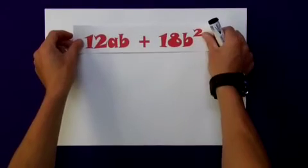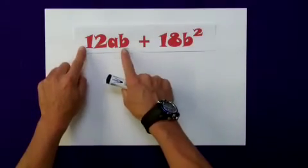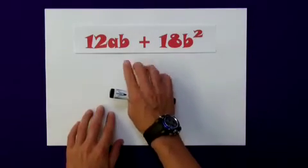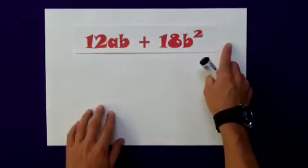Let's consider an example. We're going to try and factorise 12ab plus 18b squared. Again, I am not expected to solve this. I have 2 unknowns, and I don't have an equal sign.